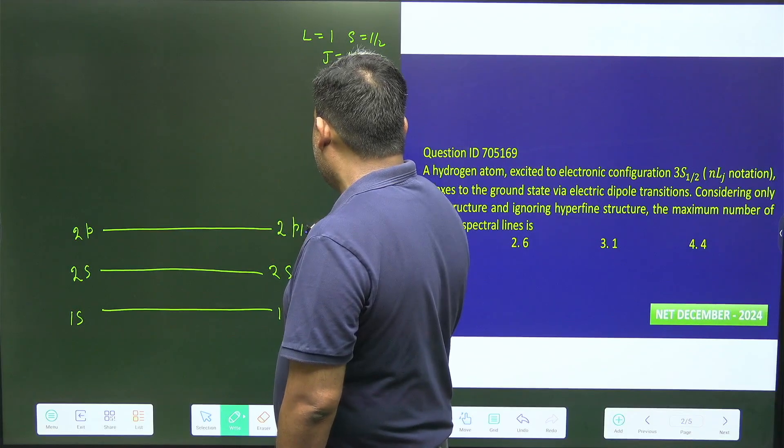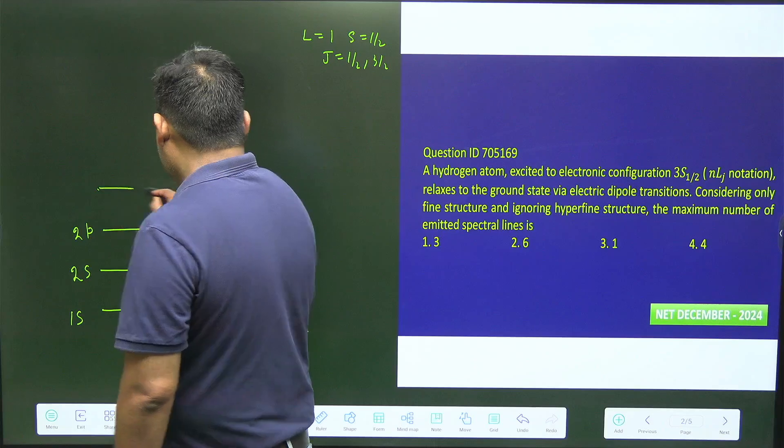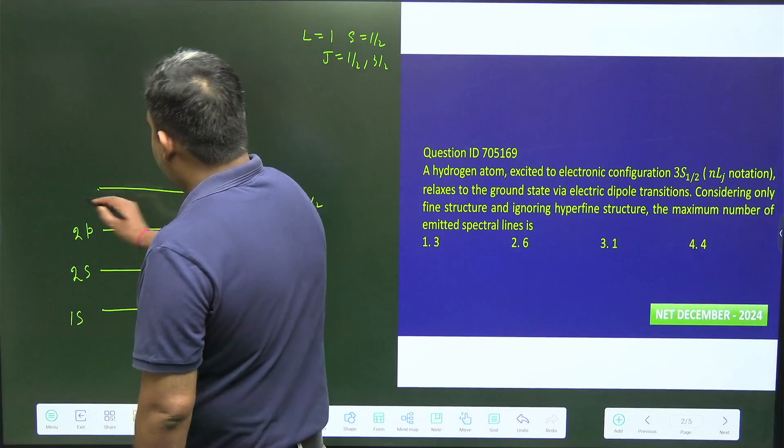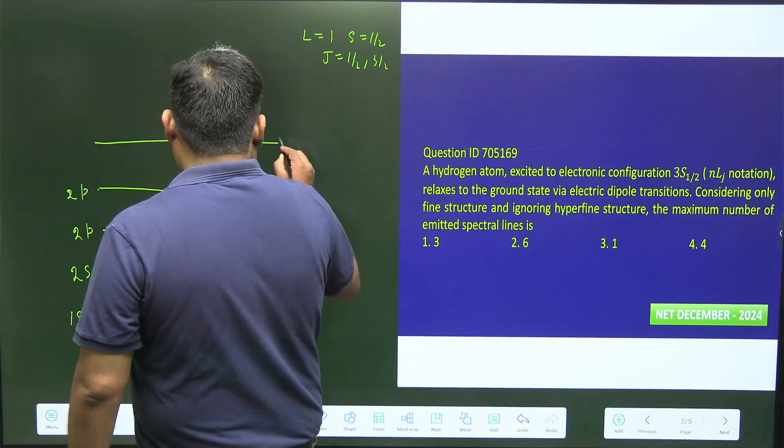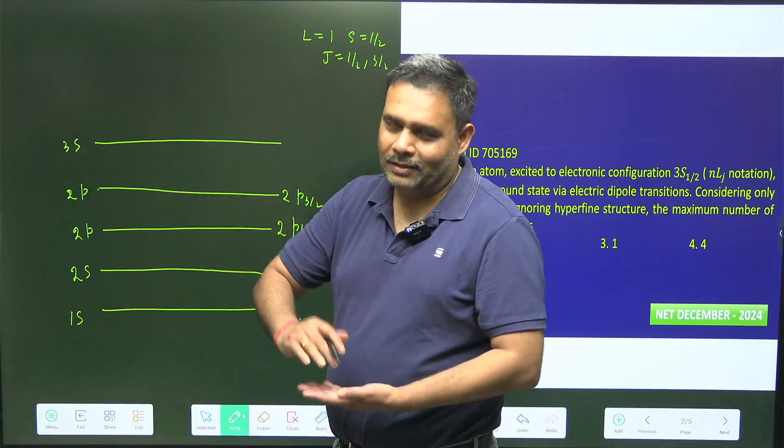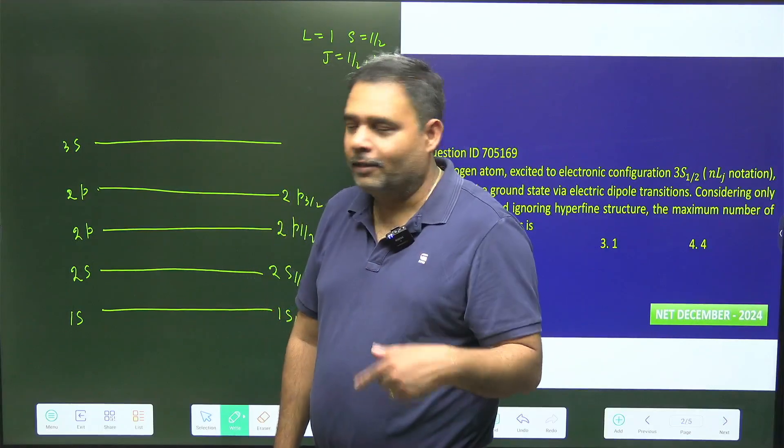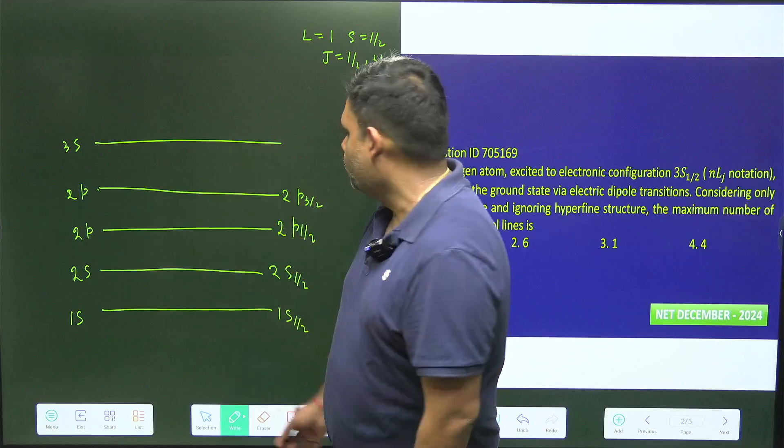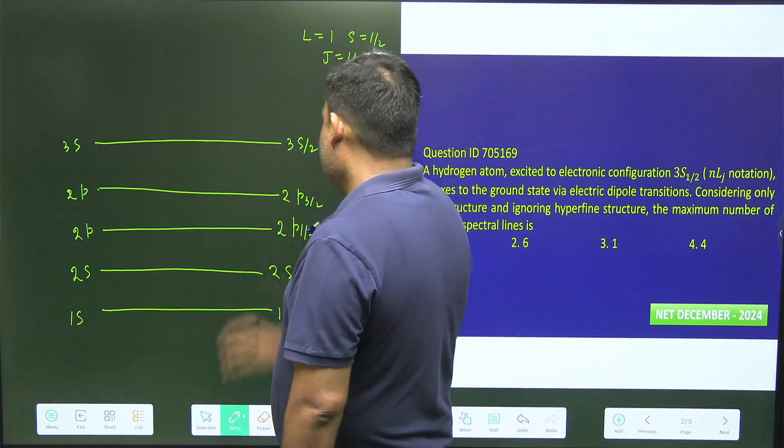So there is 2p half as well as 2p 3 by 2, and the highest level is given as 3s. I am not going to scale it because we have to just talk about the different lines and the possible transition lines according to selection rules. So this value is 3s half.